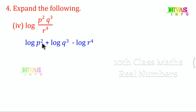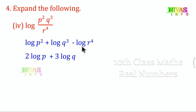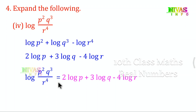Bringing the exponents to the front: 2 into log p plus 3 into log q minus 4 into log r. So the answer is: log(p² · q³ / r⁴) equals 2 log p plus 3 log q minus 4 log r.